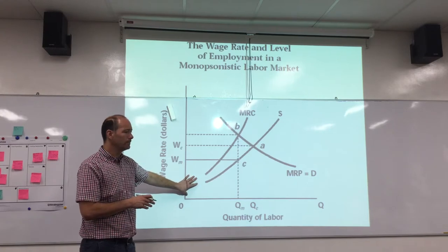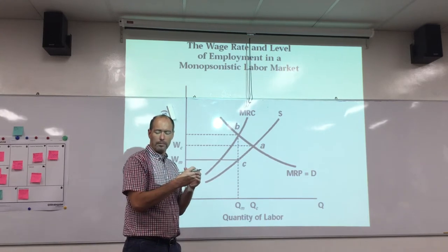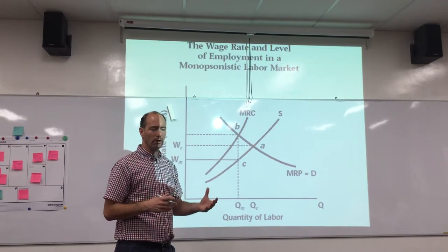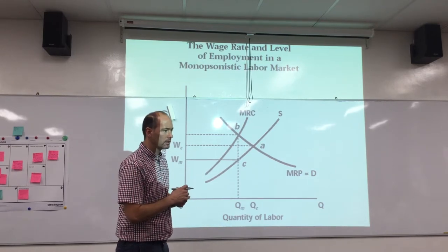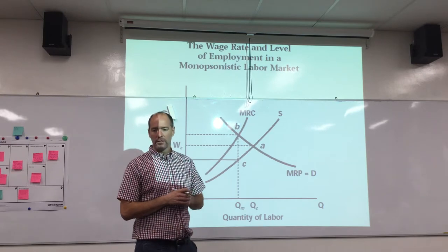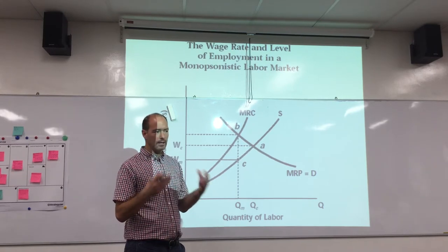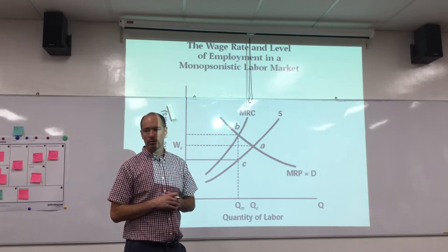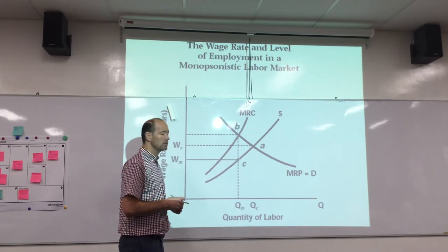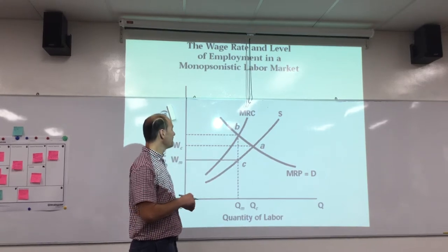So first, monopsony. What we've talked about so far are perfectly competitive labor markets where there are lots of workers freely selling their labor and lots of firms competing for those workers. In that situation, firms are wage takers — they have to accept the wage set by the forces of supply and demand in the market.